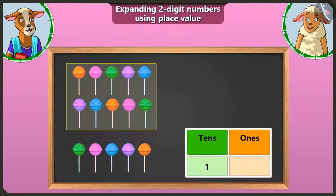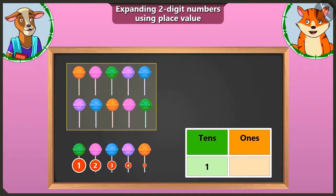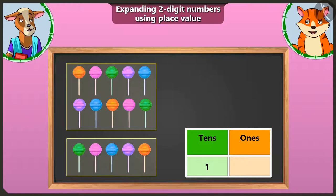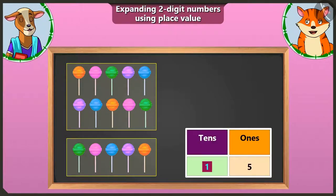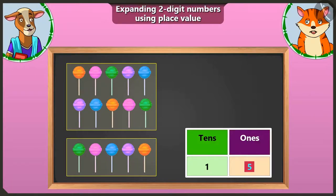Now tell me, Billy, besides the group of 10, how many lollipops are left? There are 1, 2, 3, 4 and 5 lollipops left — a group of 10 cannot be made from them. We will write the remaining 5 lollipops in the ones box. 1 ten and 5 ones — what is the number? 1 ten and 5 ones make the number 15.